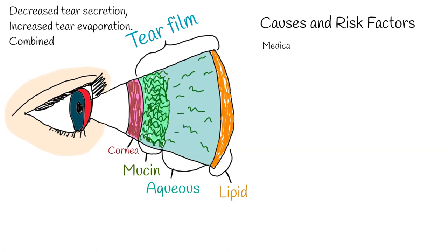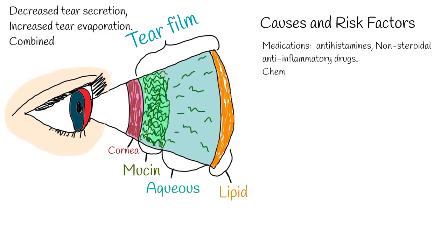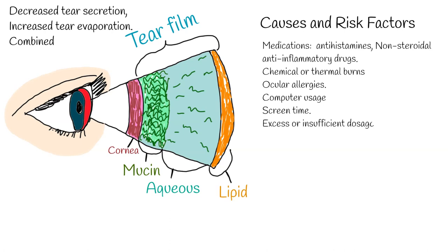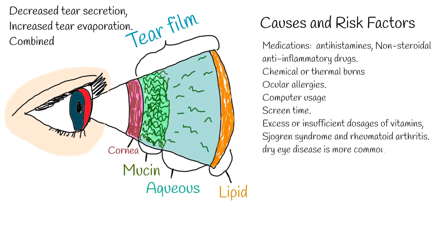Dry eye causes include medications such as systemic medications, antihistamines to treat allergy, non-steroidal anti-inflammatory drugs, and other drugs. Chemical or thermal burns that scar the conjunctiva, ocular allergies, and computer or device usage — which may lead to decreased blinking — are also causes. Excess or insufficient dosages of vitamins, particularly vitamin A deficiency which can lead to xerophthalmia, and systemic diseases such as Sjögren's syndrome and rheumatoid arthritis are additional causes.